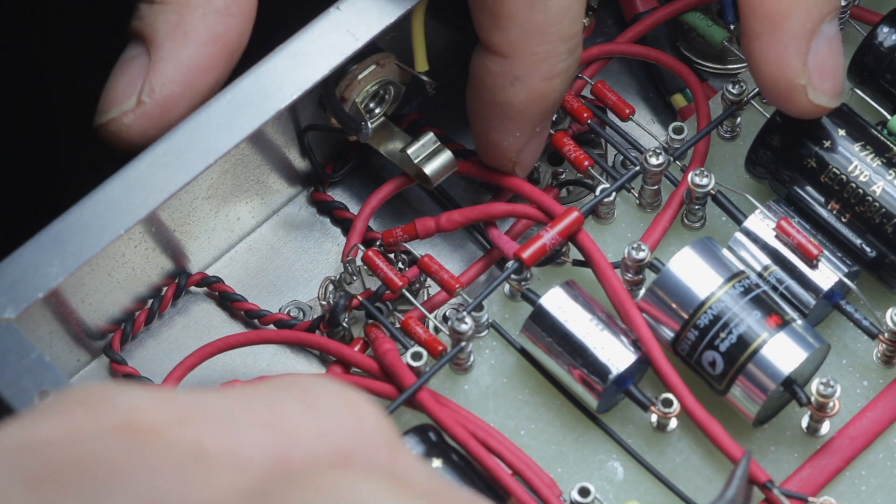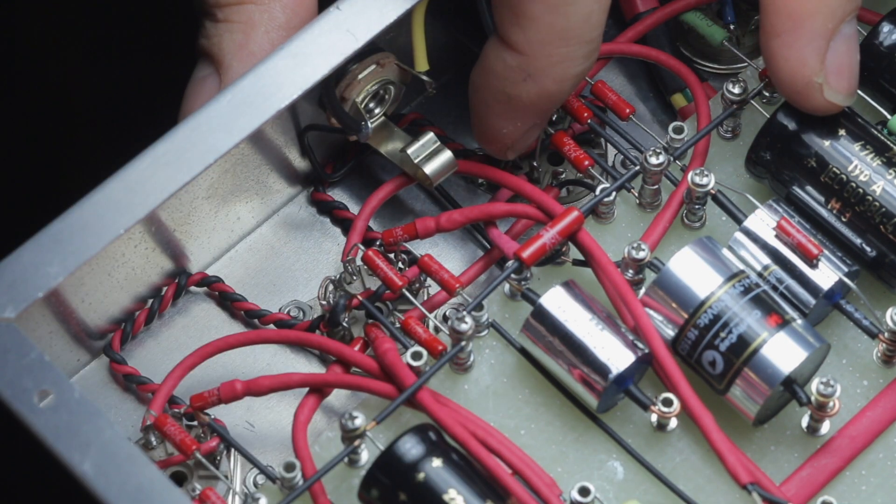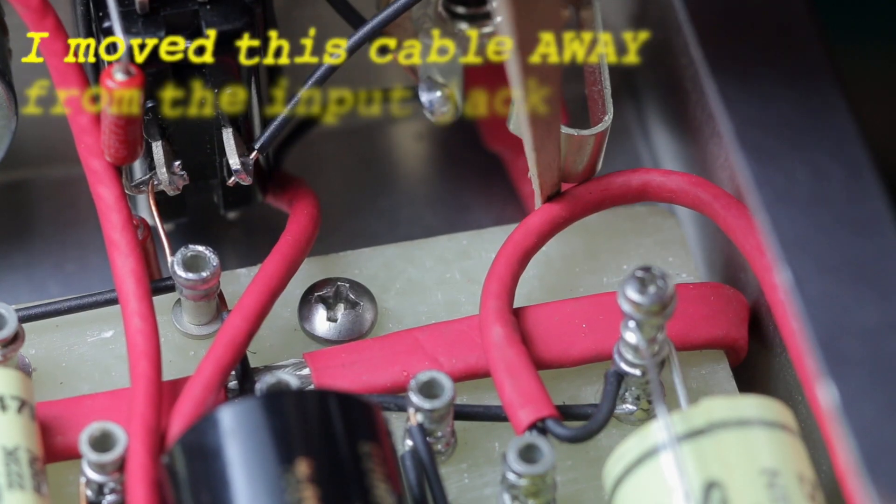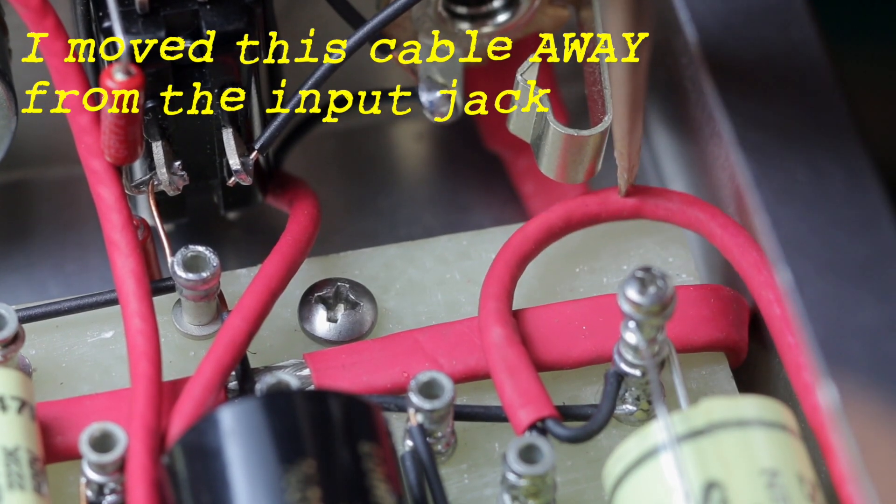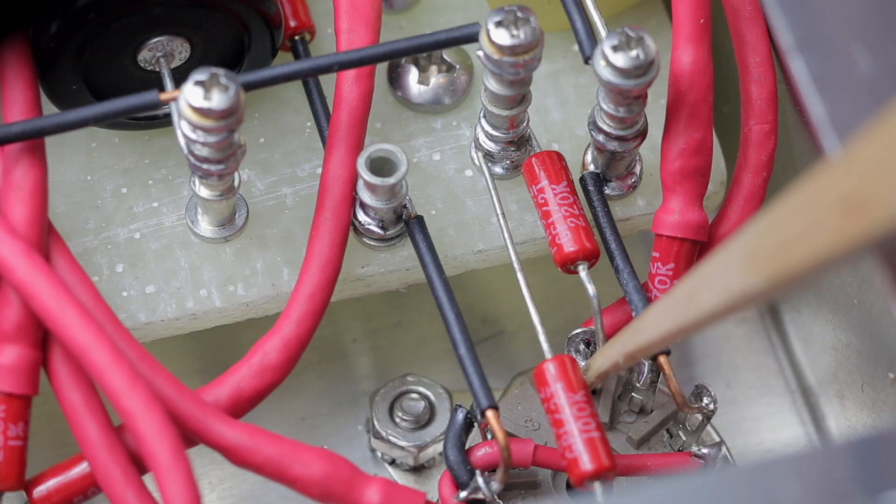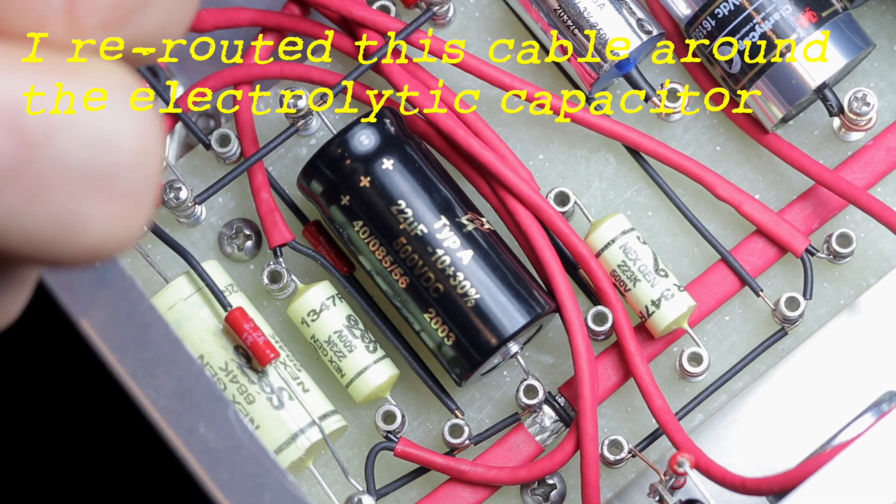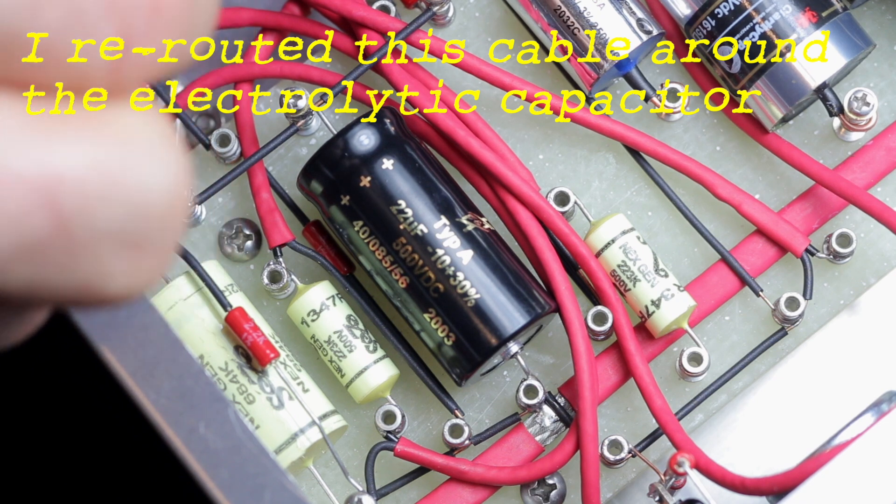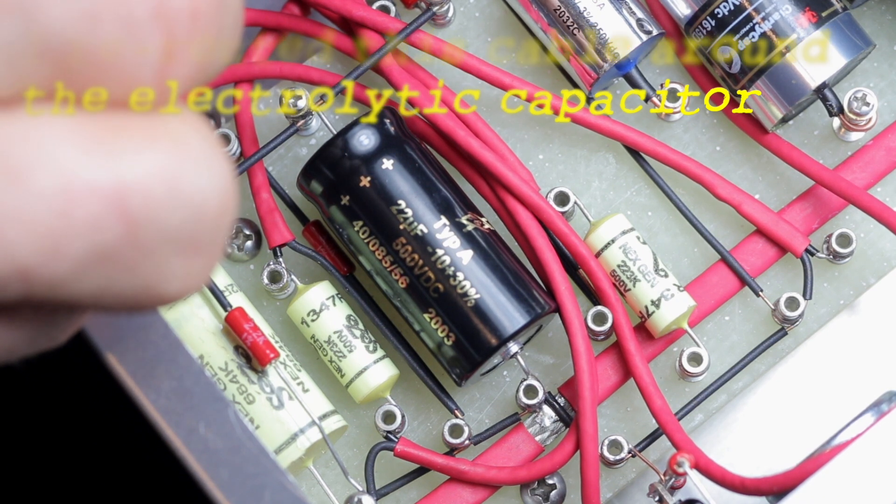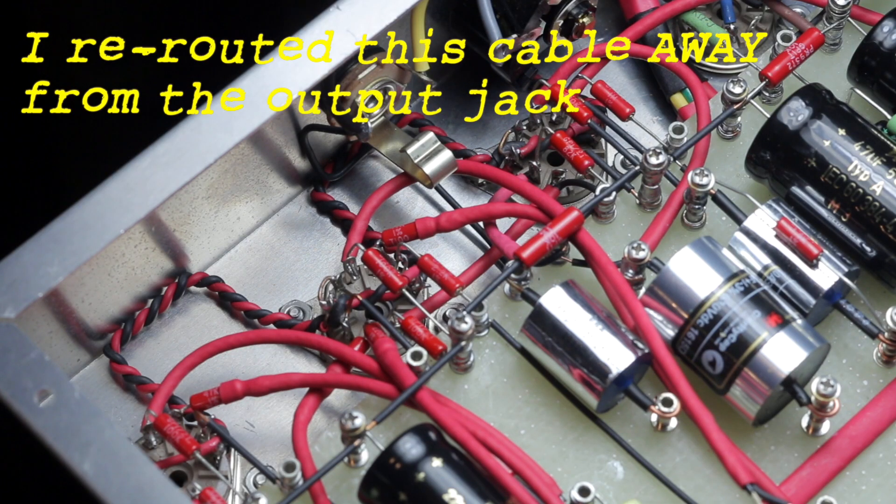I also found during this build that I had a couple of cables that were lying in less than ideal positions. The first was a cable lying right on the input jack, and the input section is probably the most sensitive part of the chassis. So I moved this cable just to ensure that the chances of any unwanted noise getting into the input section are eliminated.